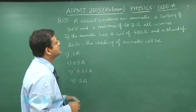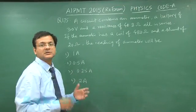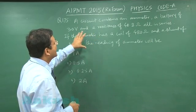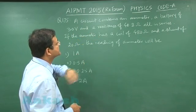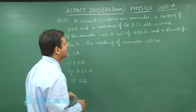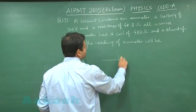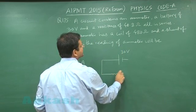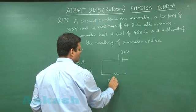Now this is a kind of question which is based on single loop circuit of current electricity. Here you have ammeter, battery, and a resistance all connected in series in a single loop. So the voltage source has been given to be equal to 30 volt and this resistance value is 40.8 ohm.